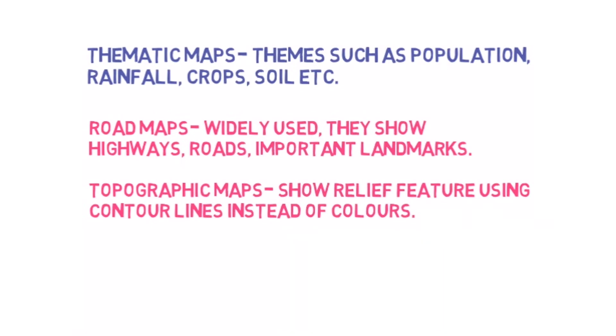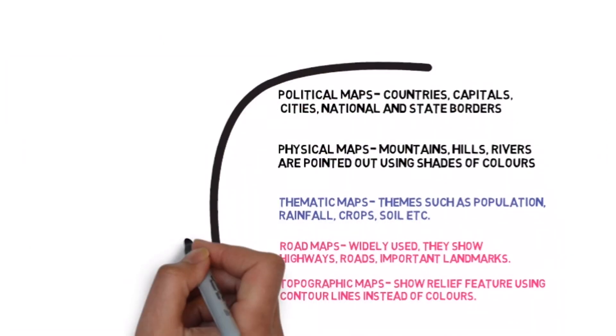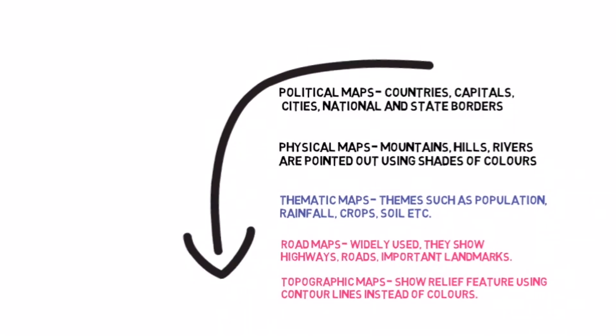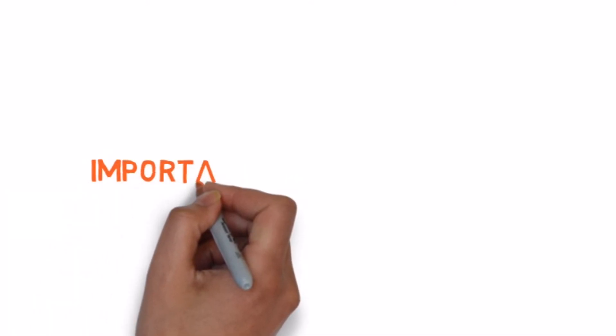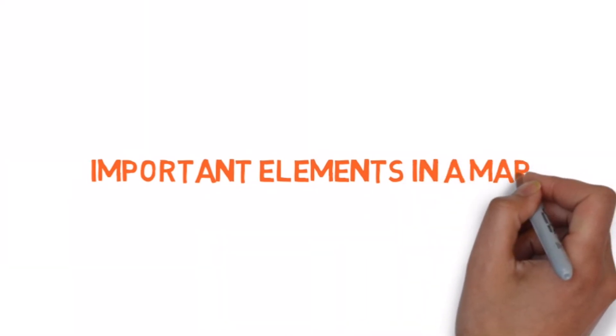So these were the five types of maps that we've covered in this module. Next let us look into some of the important elements or components or parts of a map which are indispensable. The first one is direction.